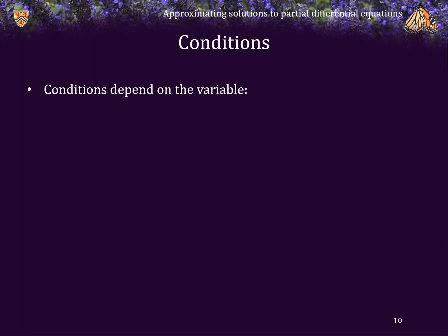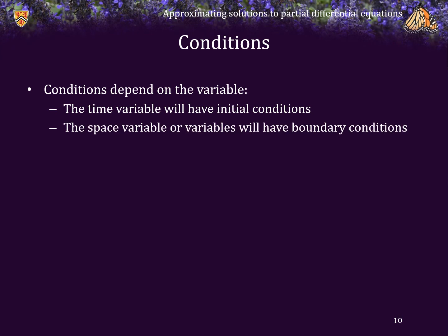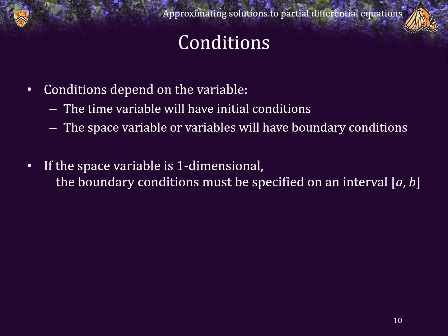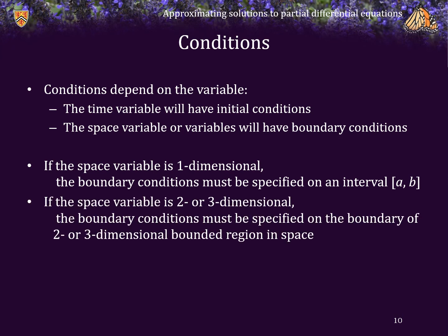Just as before, we are going to have conditions, and the conditions will depend on the variable. The time variable will have initial conditions — we must know the state of the system at every point in space at some initial time. For the space variables, however, we will rely on boundary conditions. If the space variable is one-dimensional, the boundary condition must be specified on an interval [a, b]. If the space variable is two- or three-dimensional, the boundary conditions must be specified on the boundary of a bounded two- or three-dimensional region.